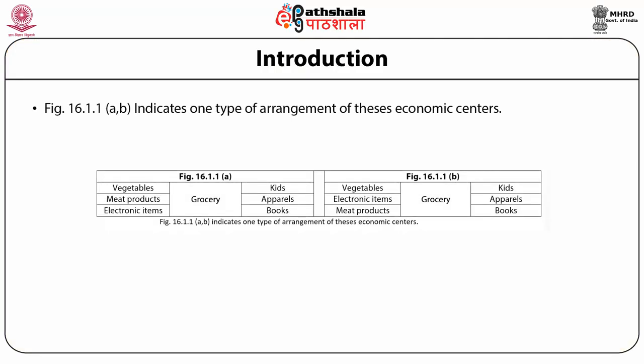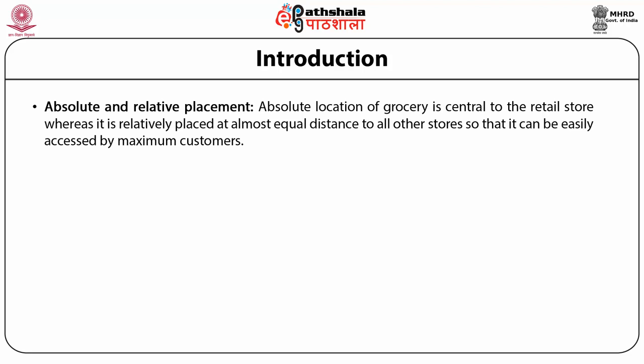A figure indicates one type of arrangement of economic centers. The centers included in a retail store are vegetables, meat products, electronic items, grocery, kids, apparels, and books. The grocery store has been allocated maximum space as its demand was estimated to be maximum. Regarding absolute and relative placement, the absolute location of grocery is central to the retail store, and it is relatively placed at almost equal distance to all other stores, so it can be easily accessed by the maximum number of customers.